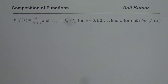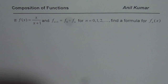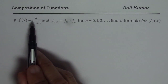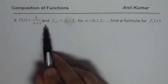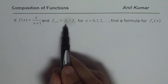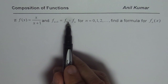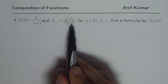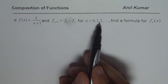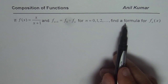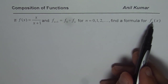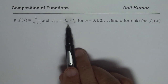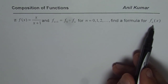I am Anil Kumar sharing with you an excellent example on composition of functions. In this video, we will learn how to create multiple composite functions. The question here is: if f of x equals x over x plus 1, and f of n plus 1 equals f of 0 composed with f of n, for n equals 0, 1, 2, and so on — find the formula for f of n of x. This means the composition is done n number of times.